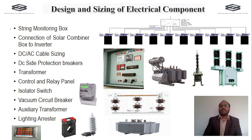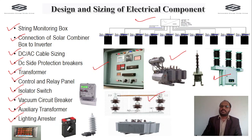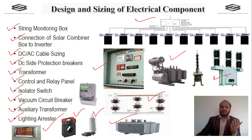Further electrical component topics include string monitoring box, combiner box to inverter connection, DC and AC cable sizing, DC side protection breakers, transformer designing, control and relay panel, isolator switch, vacuum circuit breaker, auxiliary transformer, and lightning arrester. We cover how to size these components, draw diagrams, select the control and relay panel, size cables up to the CRP panel, specify the vacuum circuit breaker, DC and AC isolator switches, current transformer, potential transformer, auxiliary transformer, and solar meter.